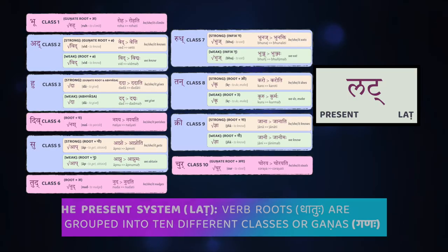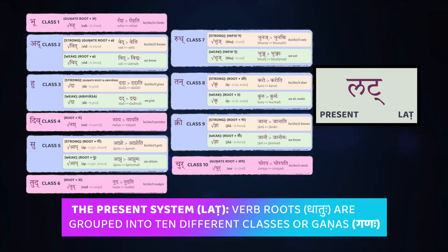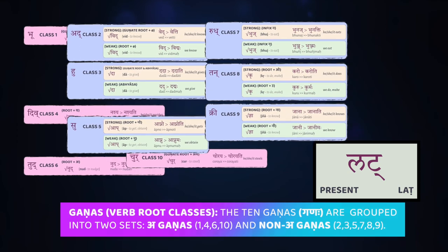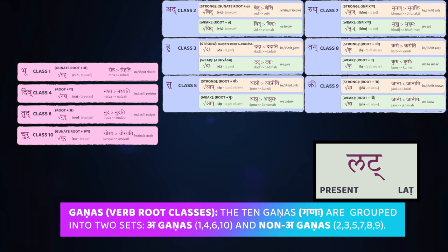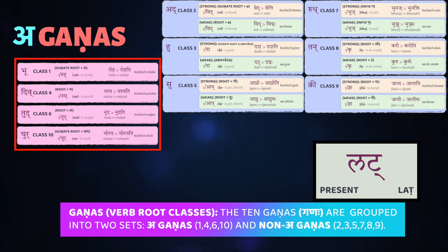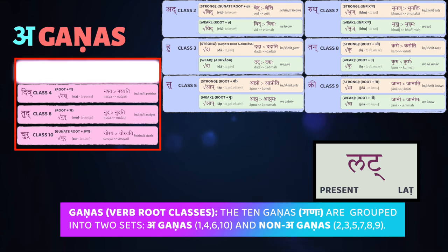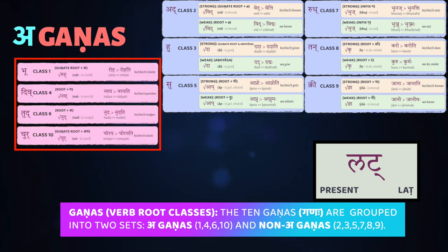For now, let's focus entirely on the present tense — the lāt — and how to form it. As I mentioned, there are ten different classes of verbs, these gaṇas, that are part of our present system. These gaṇas are further grouped into two broad sets. One set we call the a-gaṇas, which all involve a characteristic class marker — a gaṇa marker — involving the letter 'a', the akāra, during the formation of the stem. There are four of them: classes 1, 4, 6, and 10. They're relatively easier to learn, and many common Sanskrit verbs are part of these four classes.